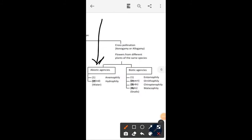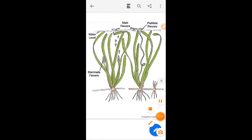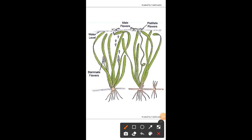This diagram is an example of hydrophily, which is included in abiotic agencies. The pollination is taking place in water — the water level is indicated. The male flowers release pollen grains that are deposited on the female flowers, meaning on the stigma of another flower. This type of pollination is called hydrophily, where the agency is water.